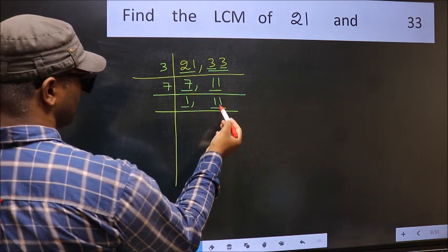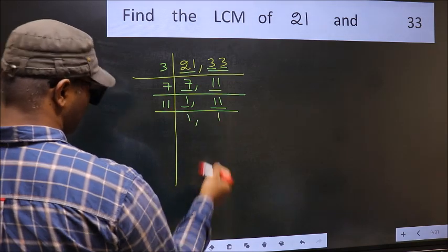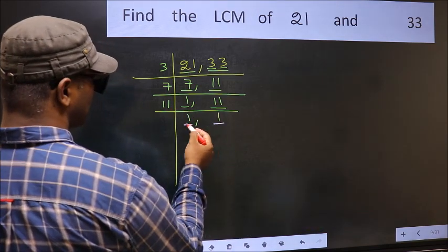So focus on the next number, 11. 11 is a prime number, so 11 ones is 11. So we got 1 in both the places.